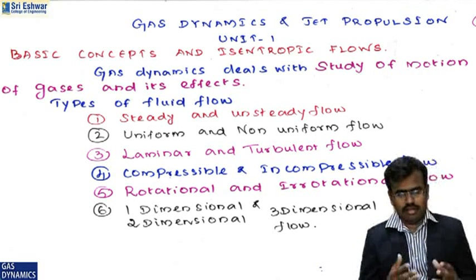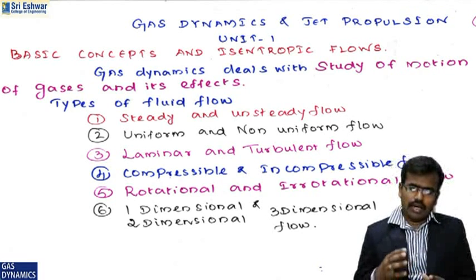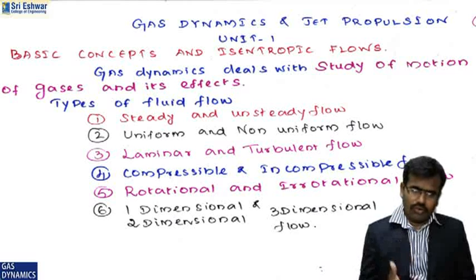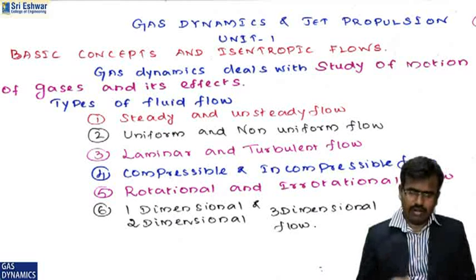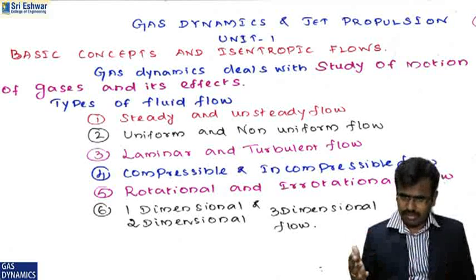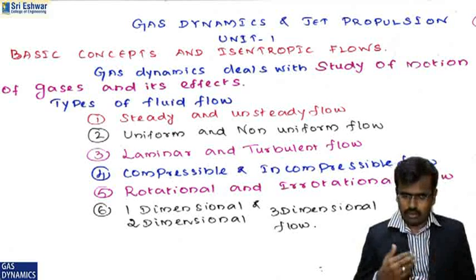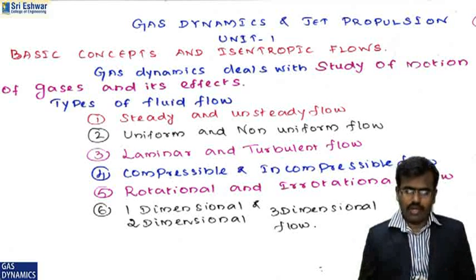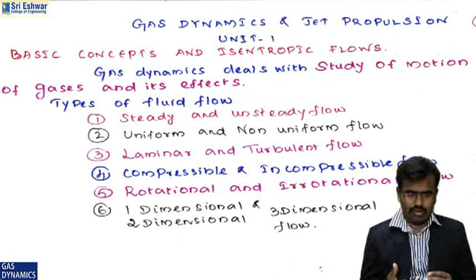Gas dynamics deals with the steady motion of gases and its effects. Fluid flow is divided into six types: steady and unsteady flow, uniform and non-uniform flow, laminar and turbulent flow, compressible and incompressible flow, rotational and irrotational flow, and one-dimensional, two-dimensional, and three-dimensional flow.